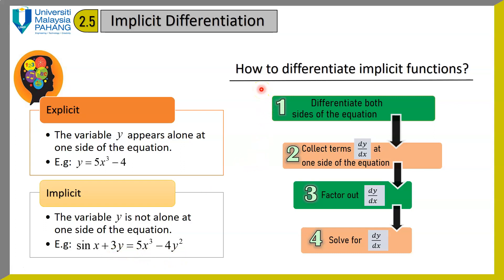So how do we differentiate an implicit function? There are a few steps to guide you. Step 1: differentiate both sides of the equation, right and left hand side. Step 2: collect terms dy/dx on one side of the equation — normally the left hand side. Step 3: factor out your dy/dx. And finally, simplify so that you have your equation with dy/dx isolated.